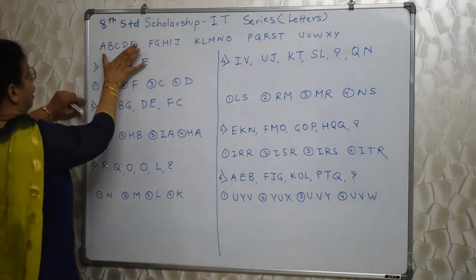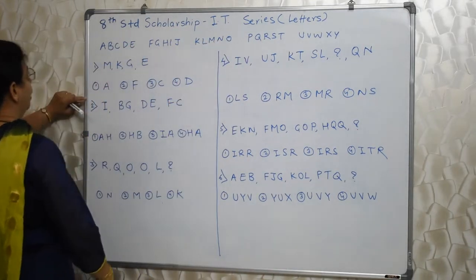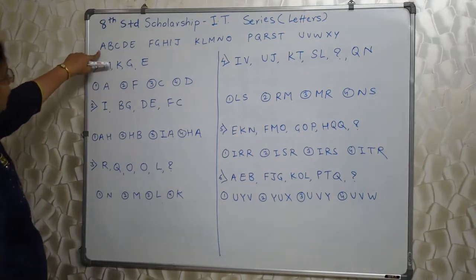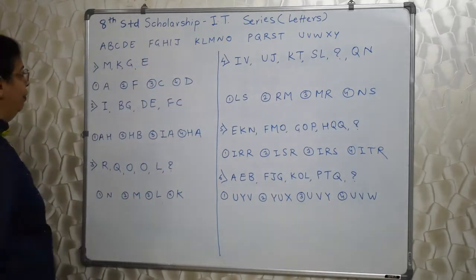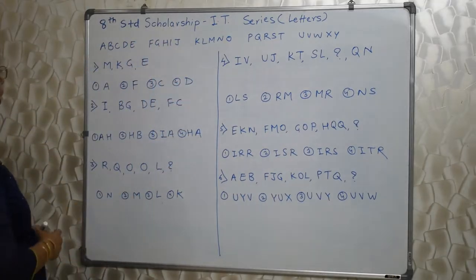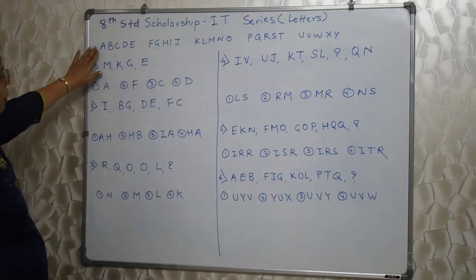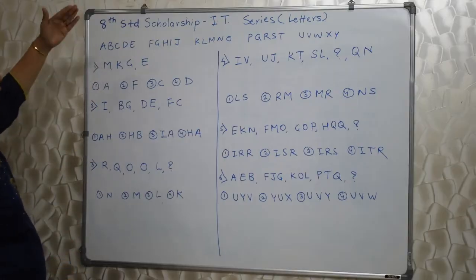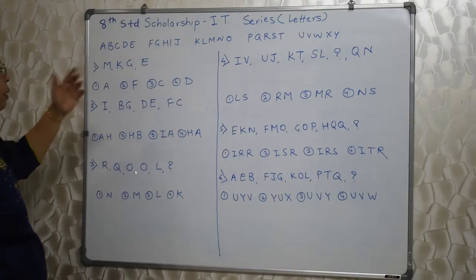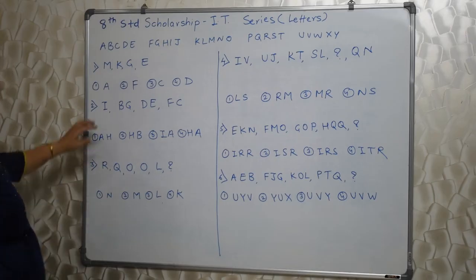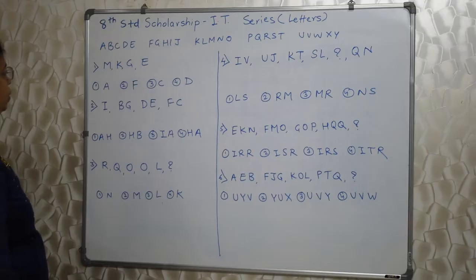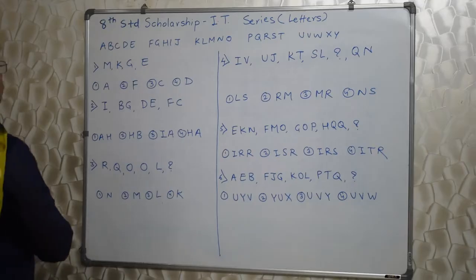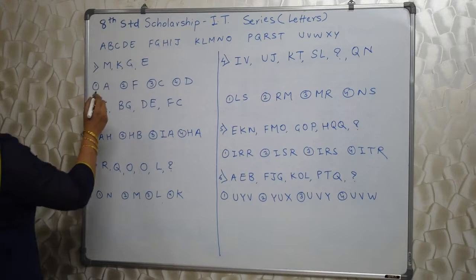These 5-5 letters and we have to give serial number to each letter. A is 1, B is 2, C is 3 up to Y is 25. Z is not there. And the questions will be based on this series or individual series which they might give you. Let's go ahead. See first sum. M, K, G, E.